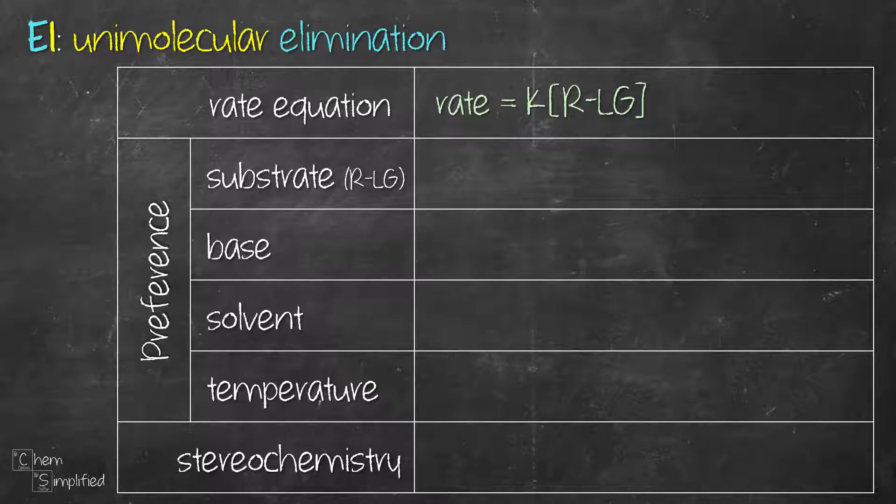Since E1 involves the formation of carbocation, the reaction is going to go the fastest when the leaving group is tertiary since it will form the most stable carbocation. This is then followed by the secondary substrate. Primary substrate is not conducive for E1 because primary carbocation is highly unstable.